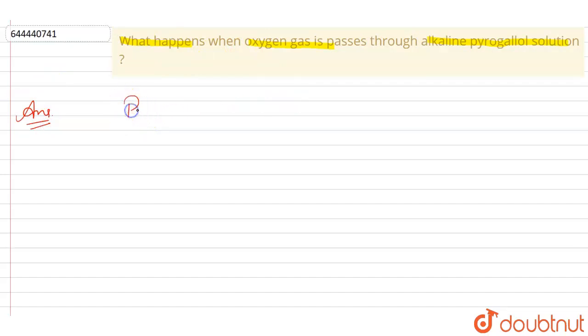Pyrogallol. What is pyrogallol? It is an organic compound having formula C6H3OH3. It is a white water-soluble solid.